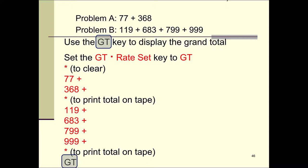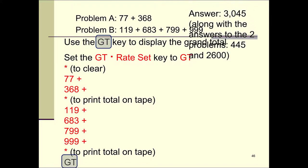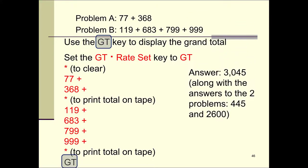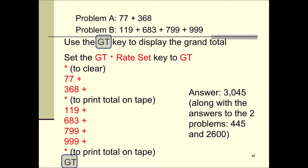The grand total is 3045. Make sure you also have the two answers to the addition problems on your tape: the first problem is 445 and the second problem is 2600.